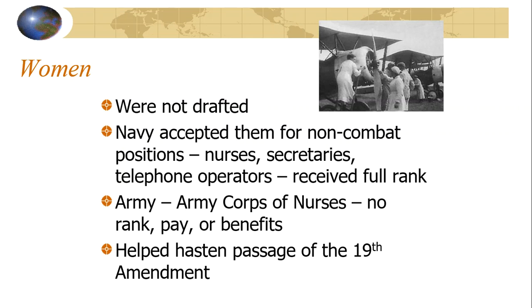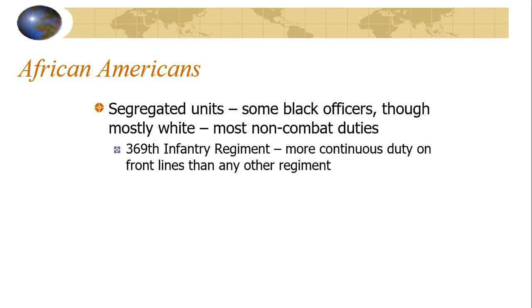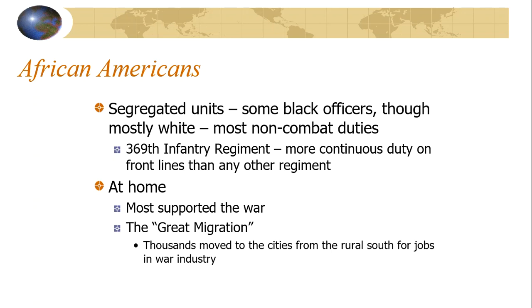African Americans served in segregated units, with some Black officers though mostly white officers, and most in non-combat duties. The most famous was the 369th Infantry Regiment, which saw more continuous duty on the front lines than any other regiment. At home, most supported the war. The Great Migration was a major movement during this time — thousands moved to the cities from the rural South for jobs in the war industry. This dramatic shift in the African American population would have a huge impact on the 1920s, giving rise to the Harlem Renaissance.